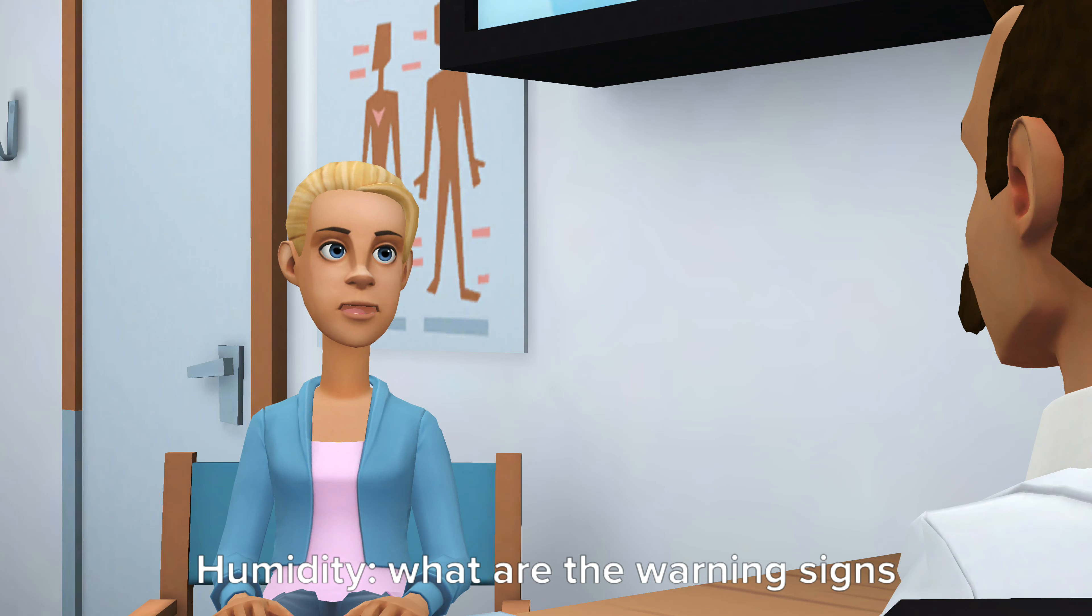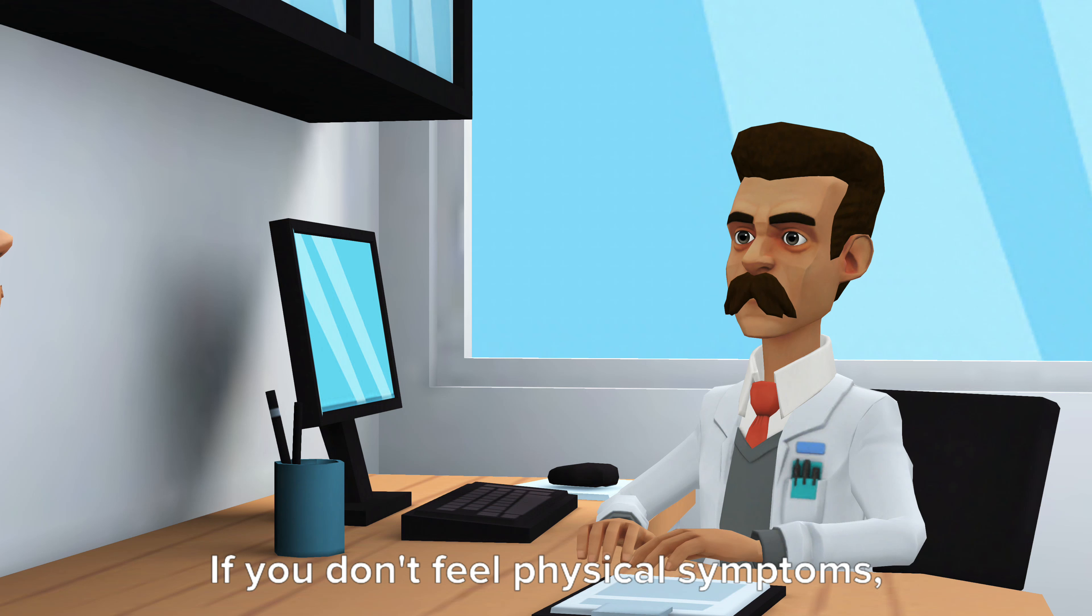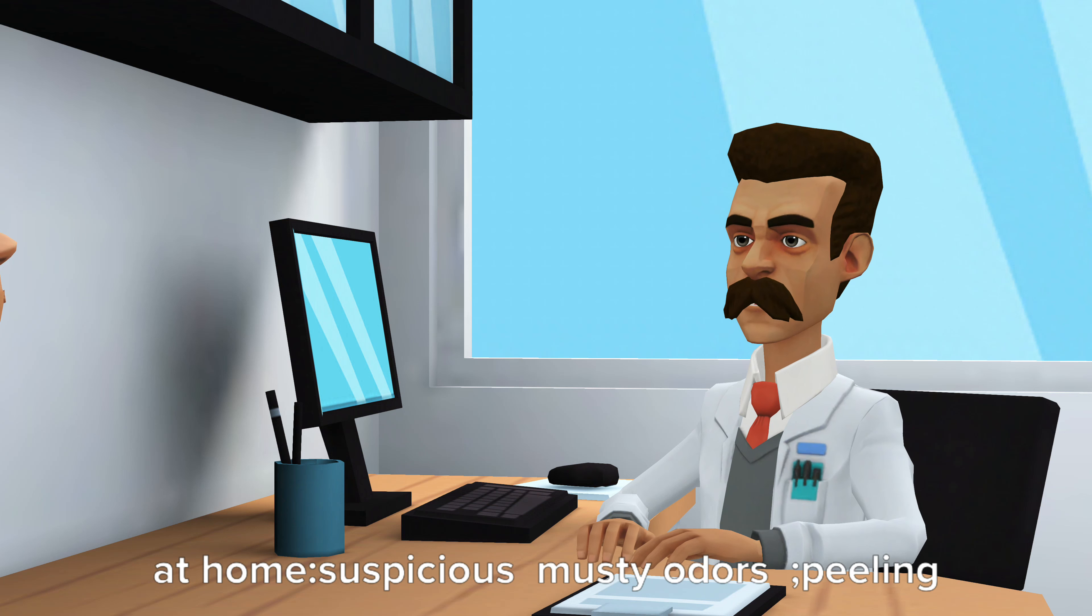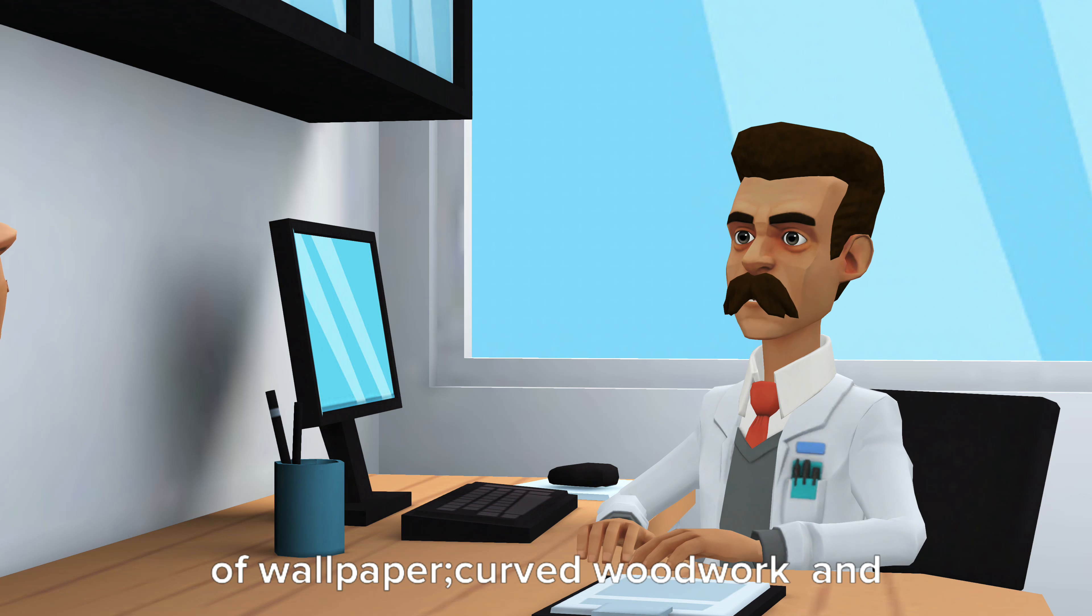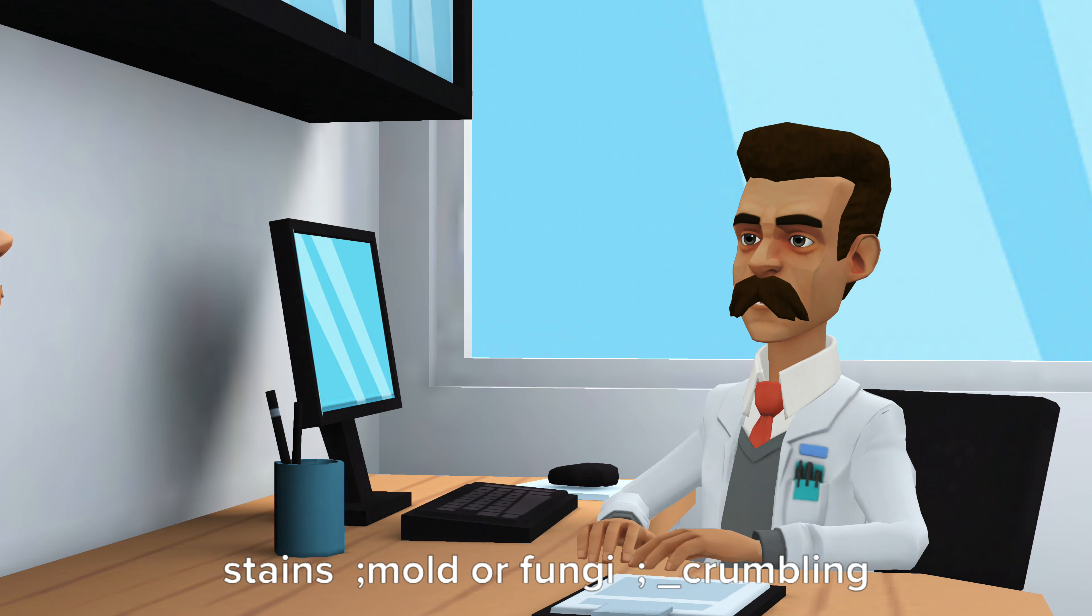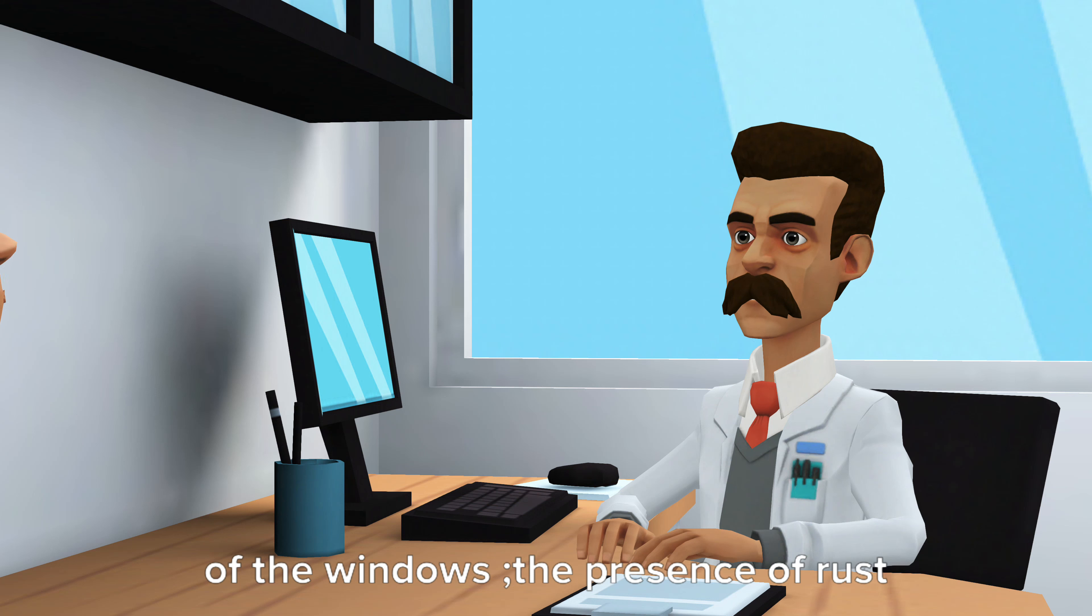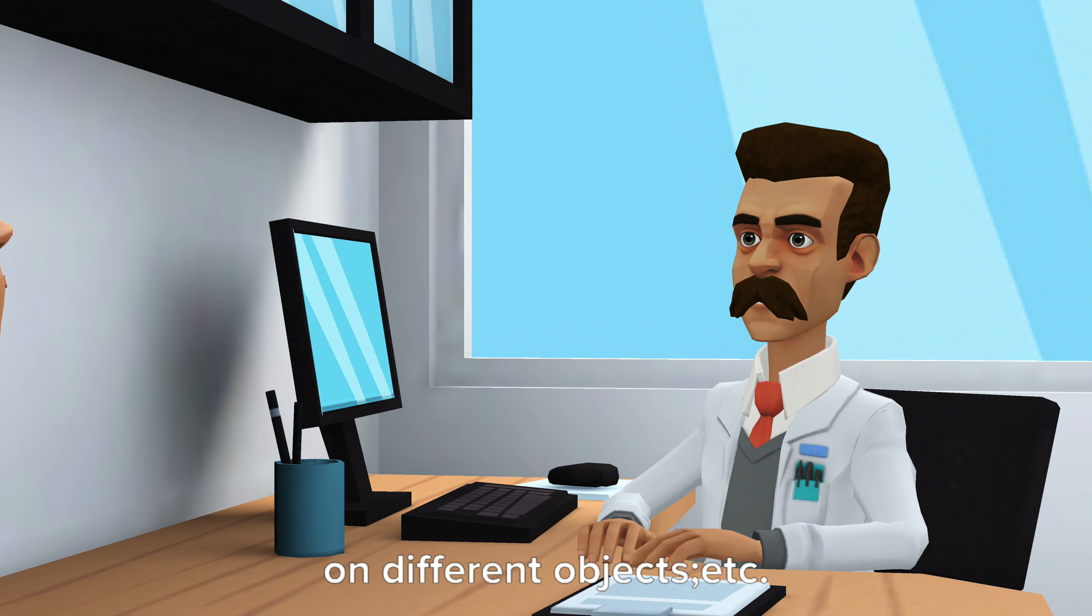Humidity. What are the warning signs at home? If you don't feel physical symptoms, there are certain signs of humidity at home: suspicious musty odors, peeling of wallpaper, curved woodwork and stains, mold or fungi, crumbling of paintwork, condensation on the inside of the windows, the presence of rust on different objects, etc.